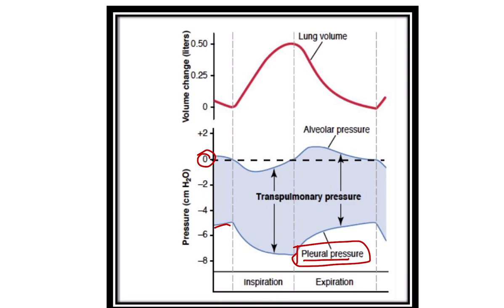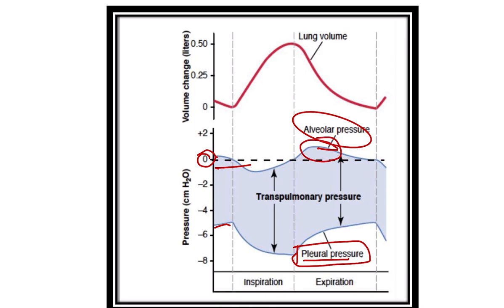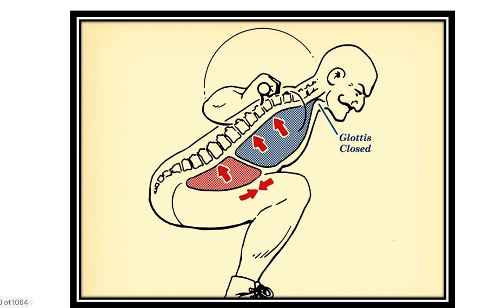The intra-alveolar pressure — that is, the intrapulmonary pressure — is sometimes positive and sometimes negative. During expiration the intra-alveolar pressure is positive, but during inspiration it is negative. So intrapulmonary pressure may be positive or negative, but intrapleural pressure is always negative. The examiner wants to know the condition in which intrapleural pressure may become positive.